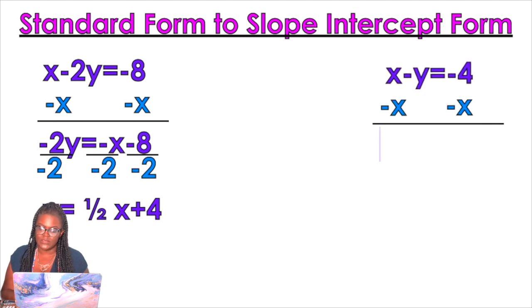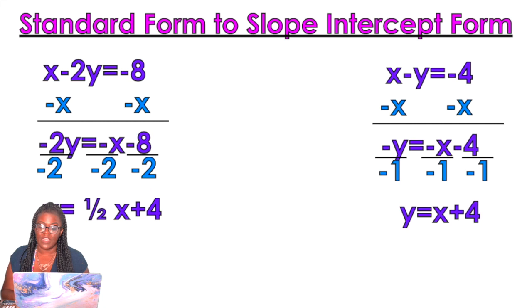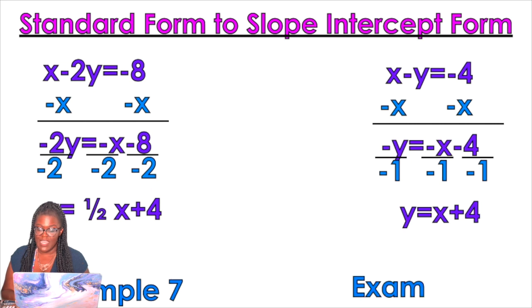Subtract x. Negative y equals negative x minus 4. A lot of times you forget that negative in the front. You have to divide by negative 1. Remember, negative divided by negative is a positive, so I'm gonna get positive x, positive 4. It's example 7 and example 8.